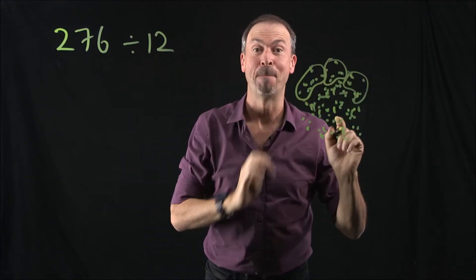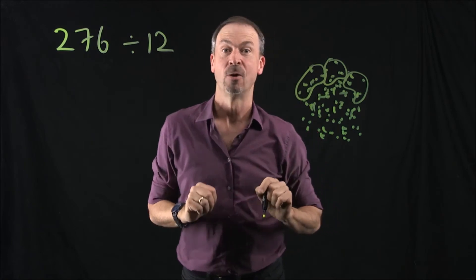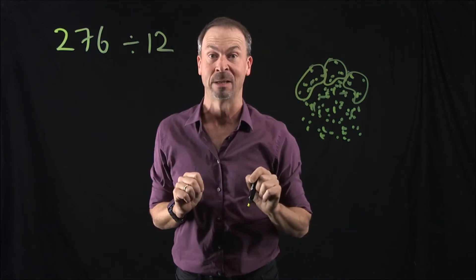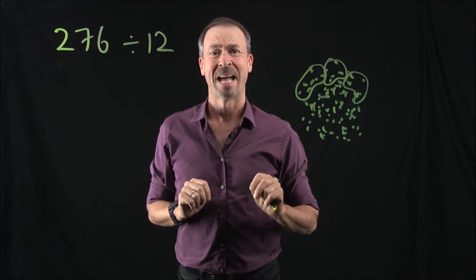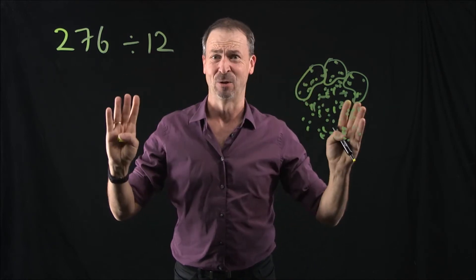So if I had the patience to actually do this, I bet I would find there are 23 groups of 12 in that picture of 276. So we then say 276 divided by 12 is 23. But that's a very horrible, inefficient way to do this.